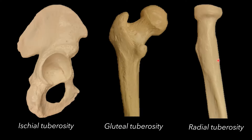My only note about this is when you're handling the radius in person, the radial tuberosity is small because the radius is a small bone. I think they went with tuberosity because comparatively to the size of the radius, it is large — but when you're looking at it compared to the other tuberosities, you might not register it as being large.